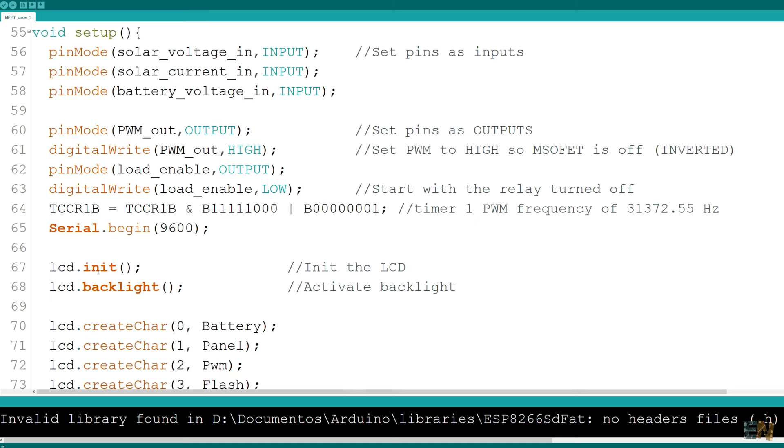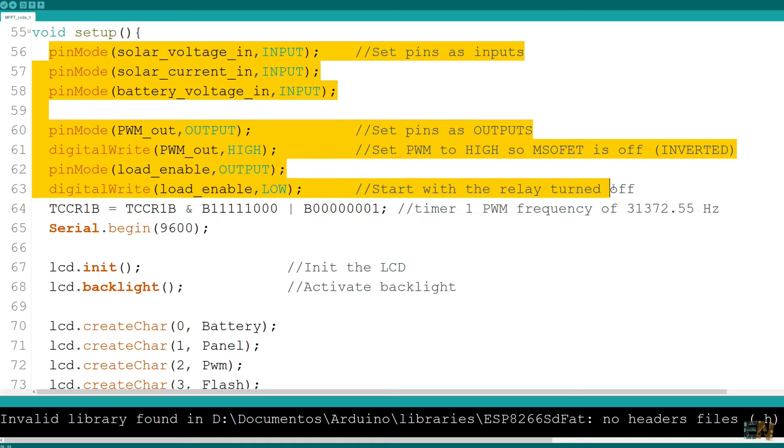In the setup loop, we change the frequency of the PWM signal because by default, that is very slow. We need to use high frequency for the buck converter. We define the inputs and outputs. Ok, now we start the void loop and first we read all the values using these functions.